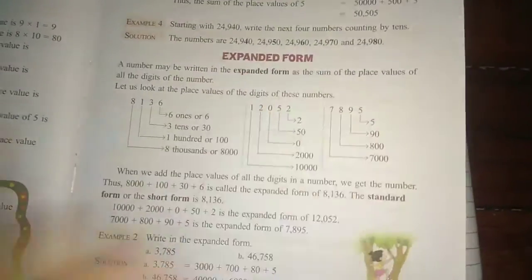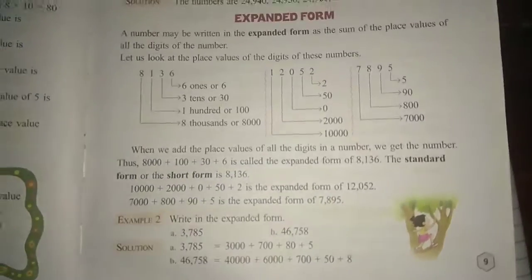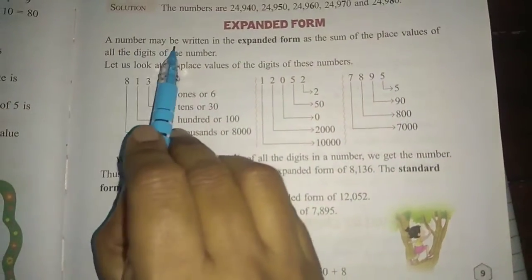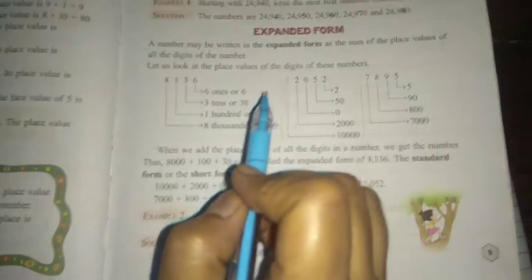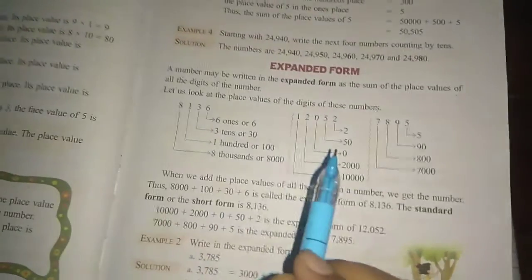Next topic is expanded form. What is the expanded form? A number may be written in the expanded form as the sum of the place values of all the digits of the number. This is the number that we write the place value in the form of sum position.